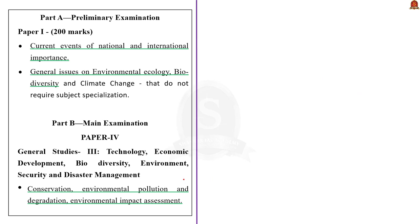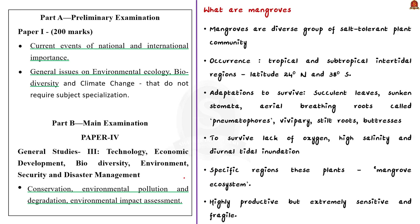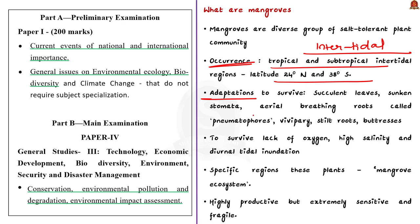Mangroves are a diverse group of salt-tolerant plant communities. They commonly occur in tropical and subtropical intertidal regions, usually between latitudes 24 degrees north and 38 degrees south. Mangroves live in intertidal regions and face challenges such as lack of oxygen, high salinity, and diurnal tidal inundations. To survive these challenges, mangroves have developed adaptations: succulent leaves, sunken stomata, aerial breathing roots called pneumatophores, vivipary, stilt roots, and buttresses. The mangrove ecosystem is extremely sensitive and fragile.